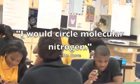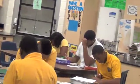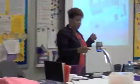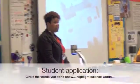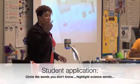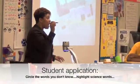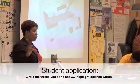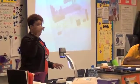I will circle 'molecular nitrogen' — only because I don't know if that's any different than regular nitrogen. So do you kind of get where we're going with this? I want you to do that for the other two paragraphs. Finish these two paragraphs and go ahead and circle the words you don't know, highlight the science words, and underline some good definitions. Do that now.